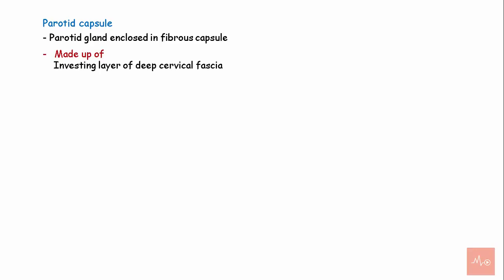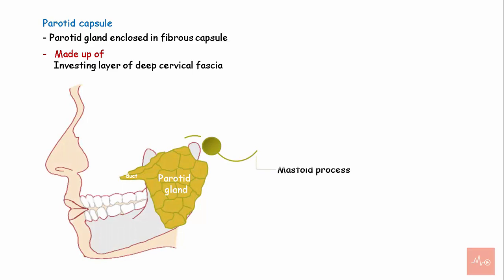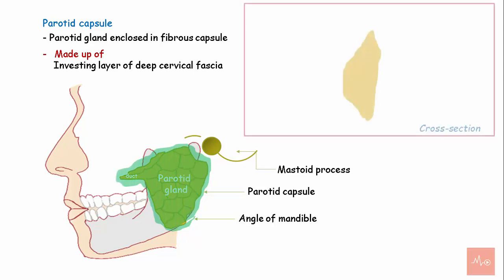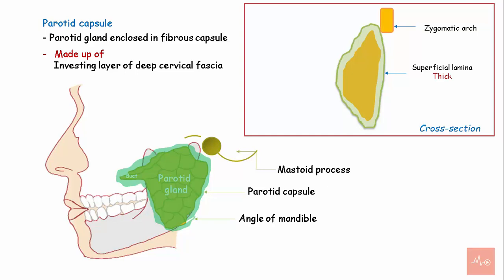Regarding the parotid capsule, the parotid gland is enclosed in a fibrous capsule made up of the investing layer of the deep cervical fascia. The fascia splits between the mastoid process and the angle of the mandible and encloses the parotid gland. The capsule has a thick superficial lamina attached to the zygomatic arch and a thin deep lamina attached to the tympanic plate and the styloid process. A portion of the deep lamina thickens to form the stylomandibular ligament.